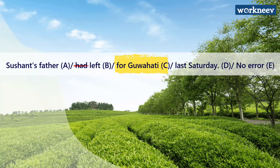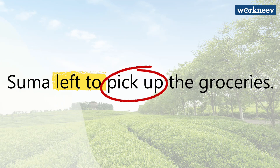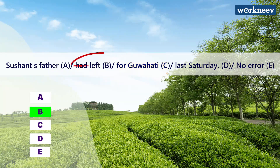If you are talking about just one event in the past, there is no need to use 'had.' Regarding option C — 'for Guwahati' vs 'to Guwahati' — consider 'Suma left to pick up the groceries.' This is correct because after 'left to' there is an action. If there is no action after 'left,' we use 'for,' like 'left for Guwahati' where Guwahati is not an action. So the correct answer for the first question is option B.